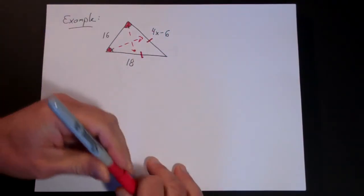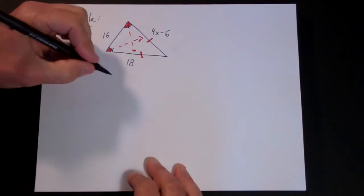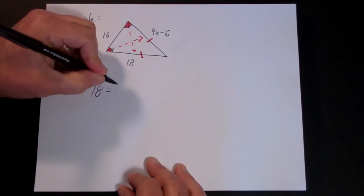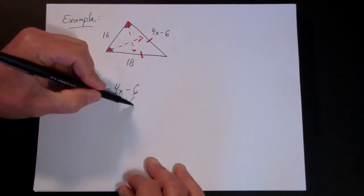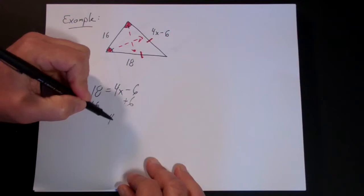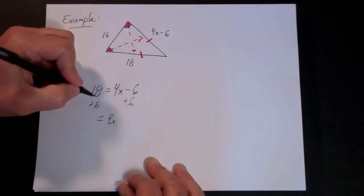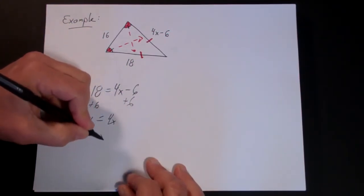So this side and this side are equal. Once you know they're equal then it's just simple algebra, right? You just go 18 is equal to 4x minus 6. You add 6 to both sides. 4x is, oh that's 24 and x is 6.